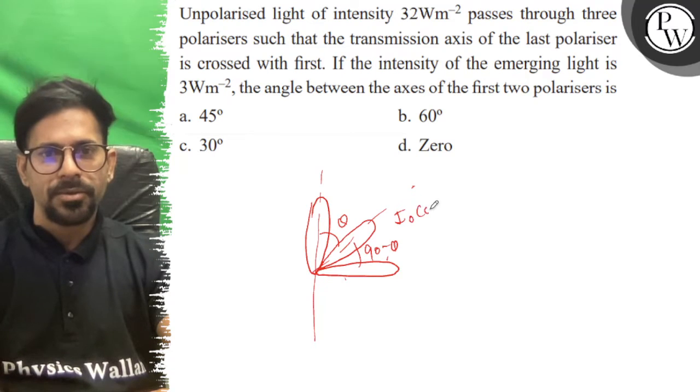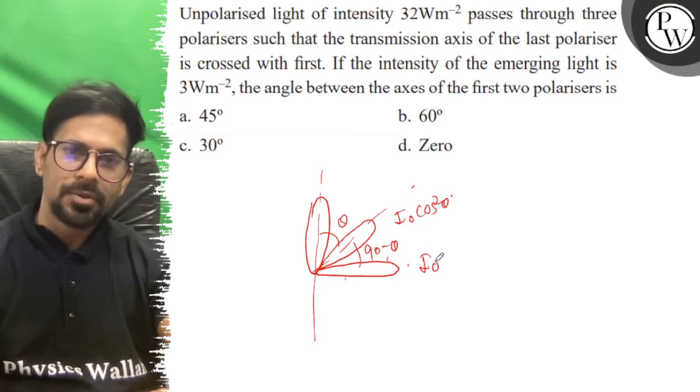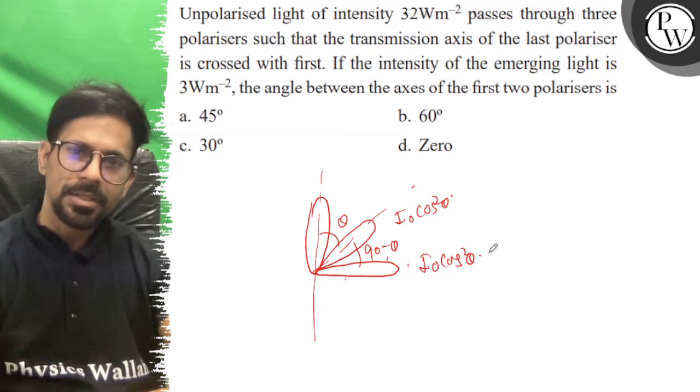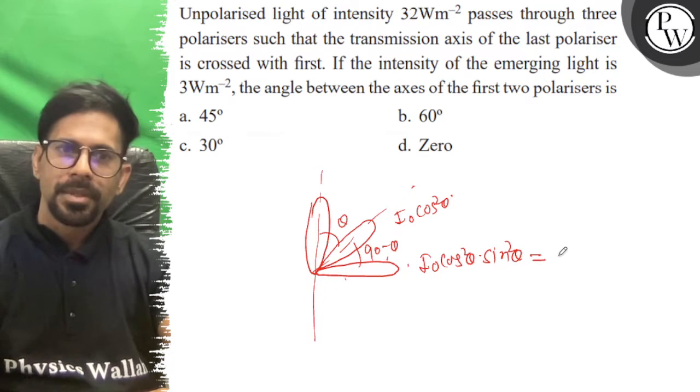Then, when light passes through, we get I_0 cos squared theta. And when it passes through this, we get I_0 cos squared theta times sin squared theta. This will give you 3.